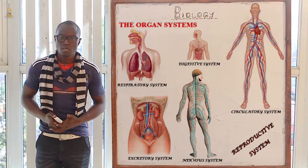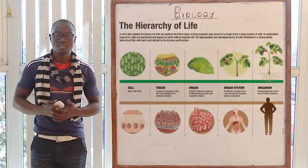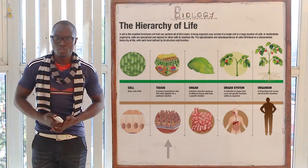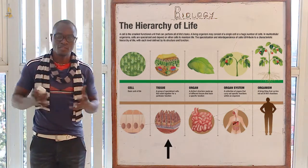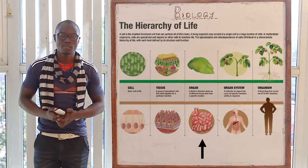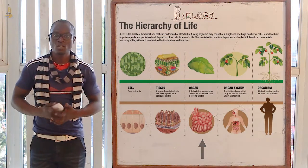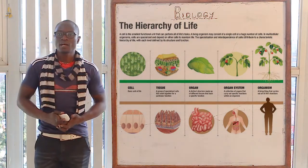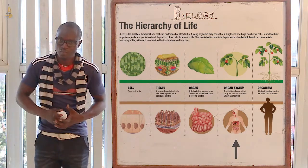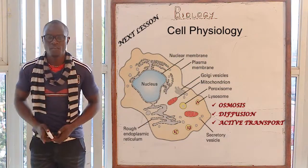Just to recap cell specialization: we defined a cell as the basic unit of a living organism. We then went to tissues, which are many cells that have come together to perform a specific function. After tissues, we defined the organ as different specialized tissues that have come together to perform a specific function. After the organ, we defined the organ system as many organs that have come together to perform a specific function. We'll meet in the next class as we embark on cell physiology.